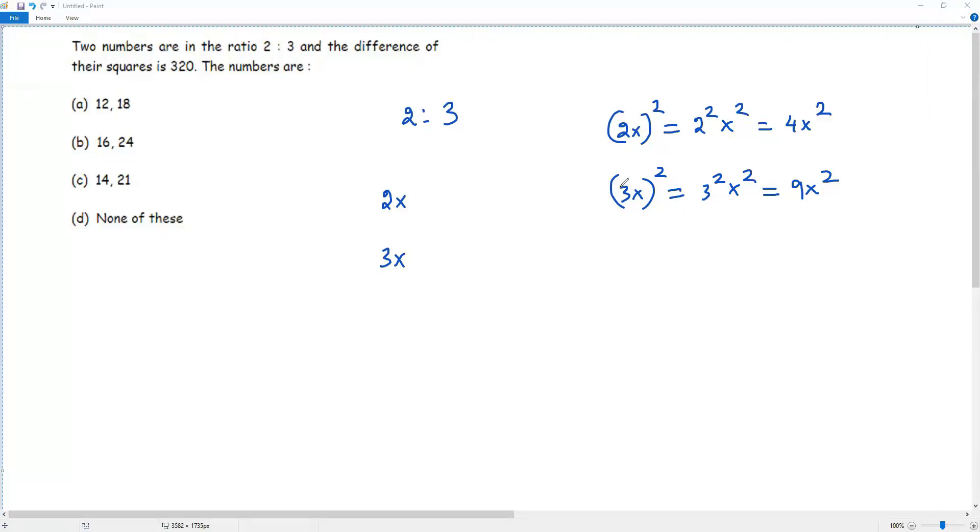Here the question says the difference of the squares is 320. We have to find the difference of the squares of two numbers. So we can consider this is bigger and this is smaller. To get the difference, we have to subtract the smaller from bigger.